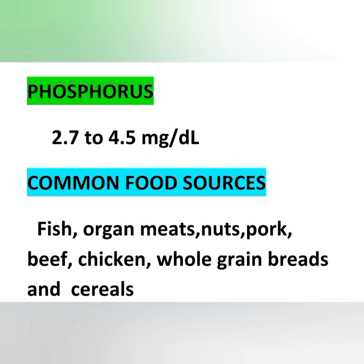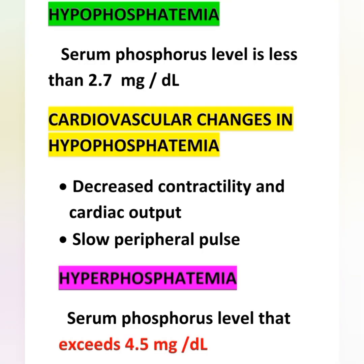The next mineral is phosphorus. Normal serum phosphorus level is 2.7 to 4.5 milligrams per deciliter. Common food sources include fish, organ meat, nuts, pork, beef, chicken, whole grain bread, and cereals. These are the important sources of phosphorus.